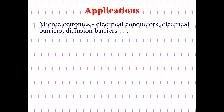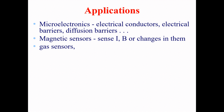What are the specific applications where we can utilize thin films? In microelectronics, deposited thin films are used as electrical conductors, electrical barriers, and diffusion barriers. In sensing applications, deposited thin film magnetic sensors can detect different elements like iodine and boron, and can also be used as gas sensors.